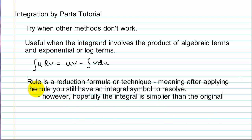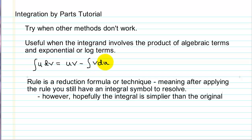The integration by parts rule is shown here: we have the integral of u times dv — a product of two things. Using integration by parts, that can be broken down into u times v (notice no integration sign here) minus the integral of v times du. In this formula, when we apply this rule, we still have an integration symbol, so we still have to apply some kind of integration technique to this part of the problem.